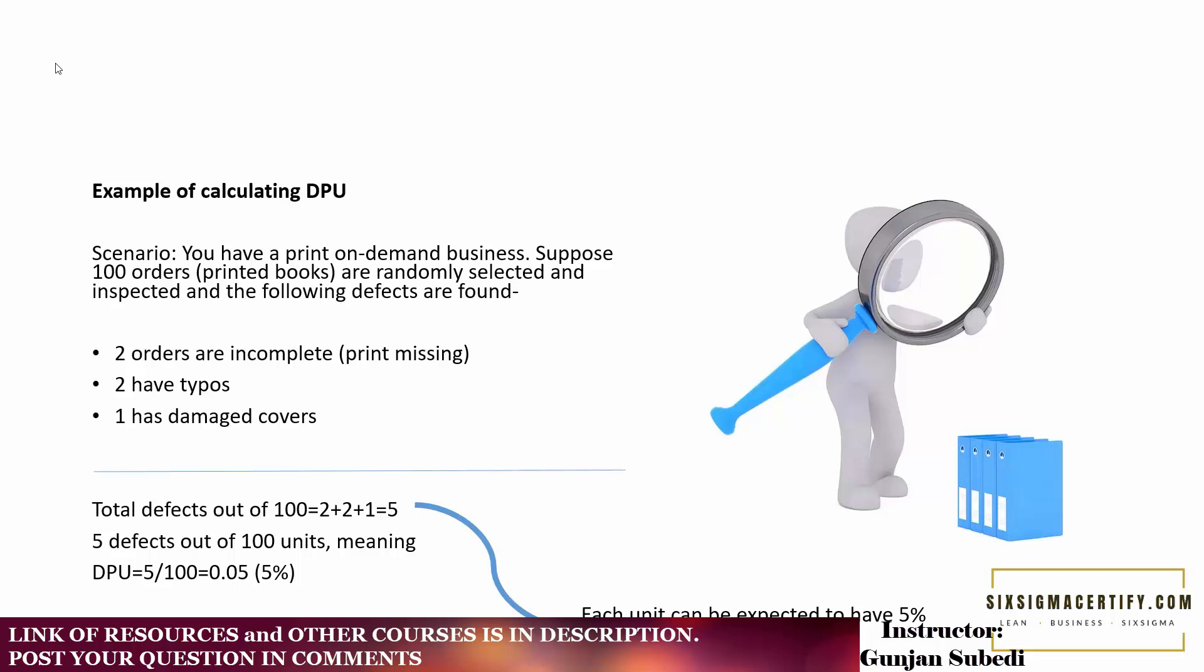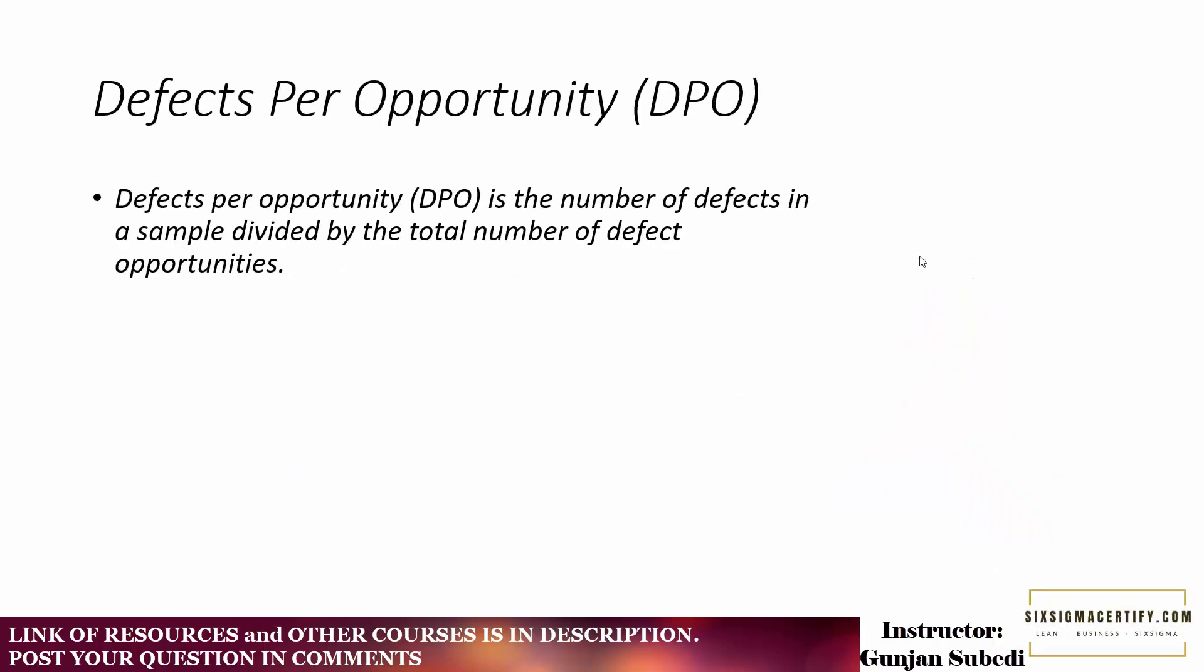In the next lecture we will also be covering the DPO, DPMO, and we'll try to understand these matrices with the help of examples. The defects per opportunity or DPO is the number of defects in a sample divided by the total number of defects opportunities. Let's see that with an example.